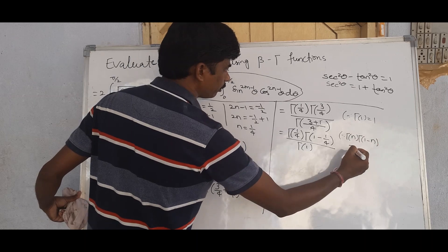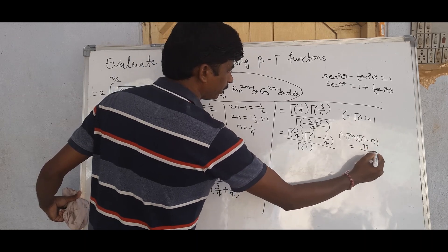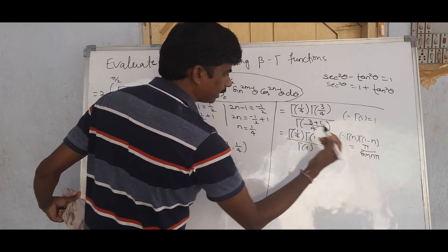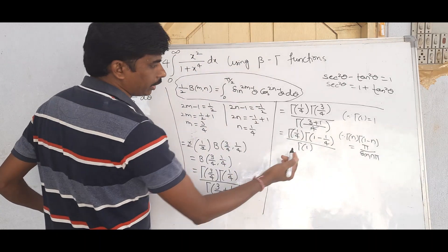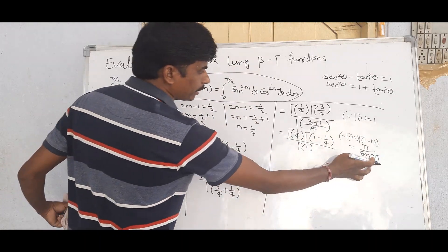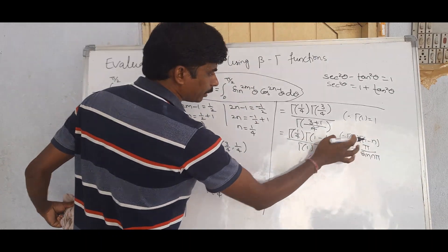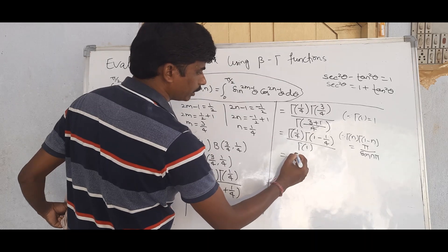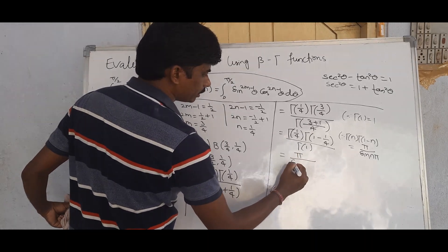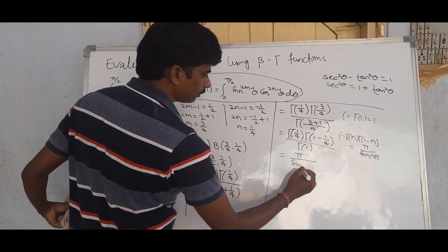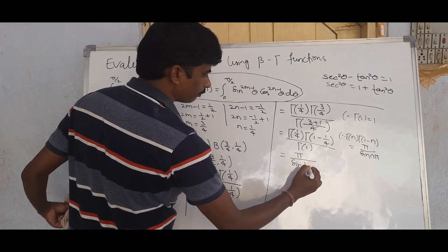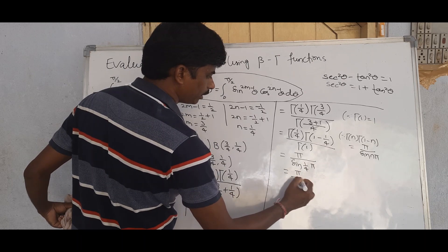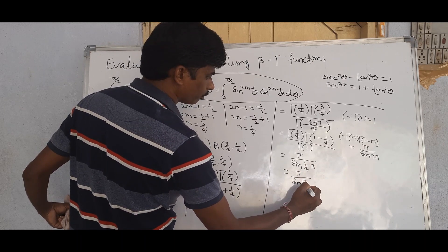Using the reflection formula: Γ(n)·Γ(1/n) = π / sin(nπ). With n = 1/4, Γ(1/4)·Γ(3/4) = π / sin(π/4). Since sin(π/4) = sin 45° = 1/√2, this gives π / (1/√2) = π√2.